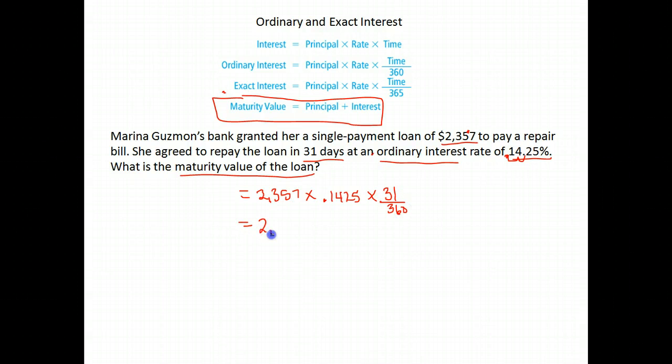So again, just go ahead and calculate that. 2,357 times 0.1425 times 31 divided by 360. When I do that calculation, I end up with $28.92.